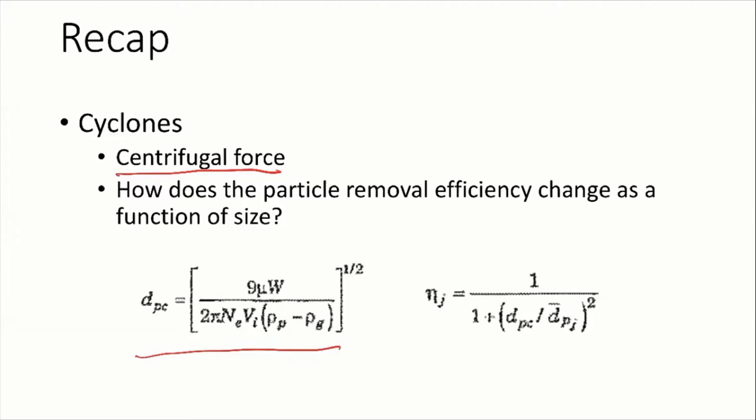In your project, you want to design PM removal devices. We also call the cyclone a pre-cleaner, mainly because it can remove a lot of large particles. Once the flue gases form, the cyclone is basically the first device treating the particles, because it's very efficient for large particles. We can get rid of most of the large chunks out of the flue gas.